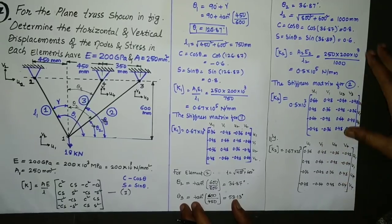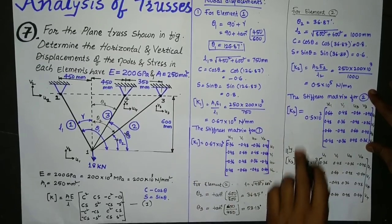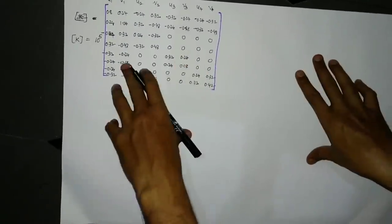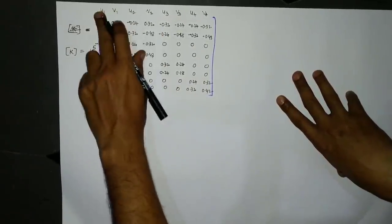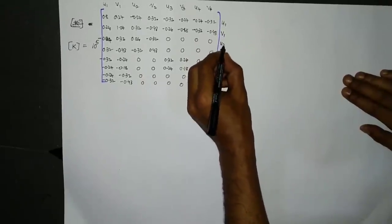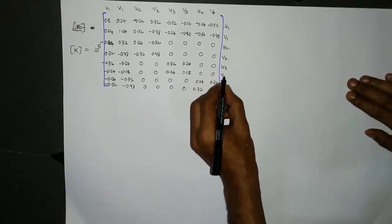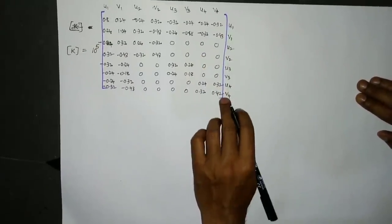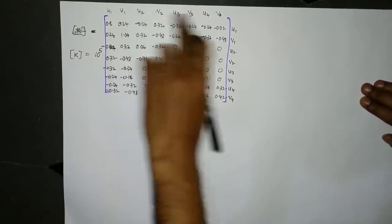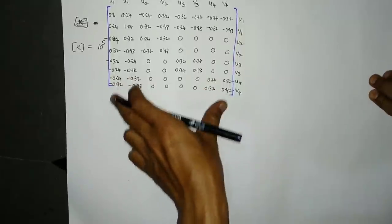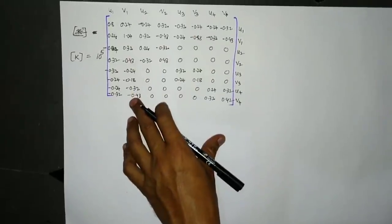After calculating K₁, K₂, and K₃, we assemble the global stiffness matrix. The displacement vector is u1, v1, u2, v2, u3, v3, u4, v4 — written in rows and columns. With four nodes and two displacements each, it is an 8×8 matrix.